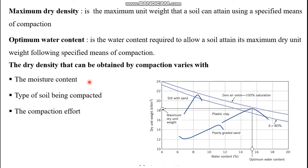The dry density can be affected by different factors. The first is moisture content. An optimum moisture content gives maximum dry density. If water content is below the optimum, soil particles will not have sufficient lubrication to move easily and be compacted. If water content is above the optimum, water will displace or pull apart soil particles, reducing dry density. Therefore, optimum moisture content is critical.